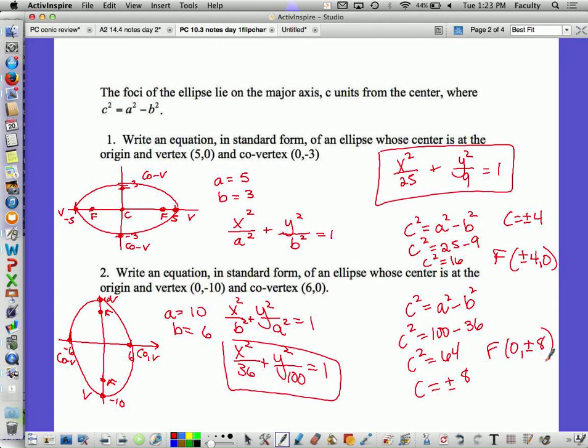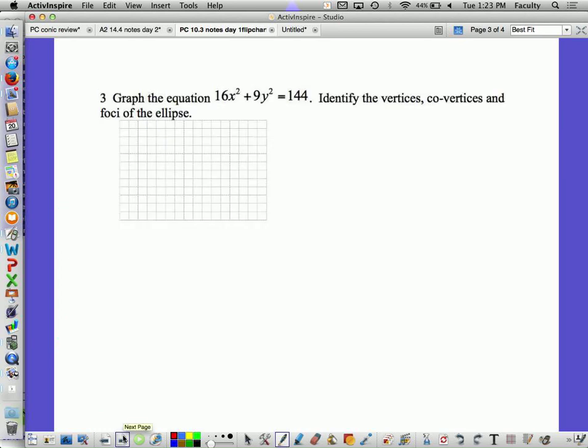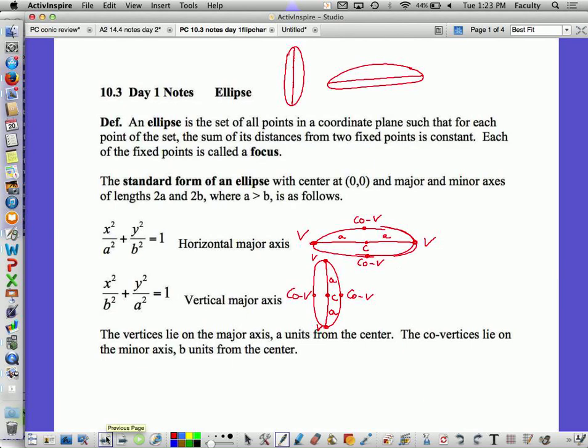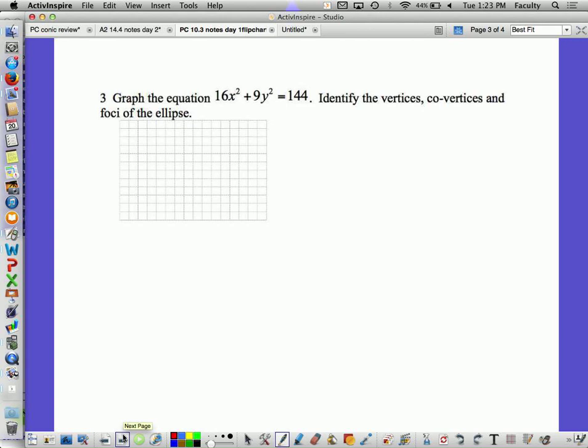All right, now we're going to move to equations in example 3. It says, graph the equation 16X squared plus 9Y squared equals 144. Well, let me go back a screen or two. The standard form, it has to have an equation that equals 1. So what do I need to do in example 3 in order to make this equal 1? Divide by 144. So I get X squared over 9 plus Y squared over 16 equals 1. And we'll tell you in about 99% of the cases this will happen where these two numbers just switch. It occasionally doesn't, but the majority of the time it does.